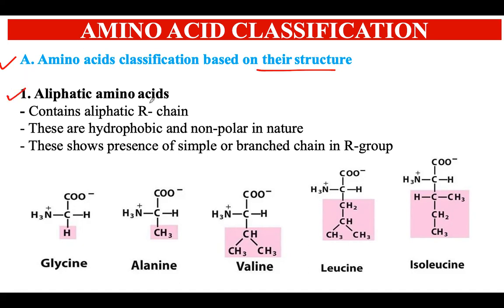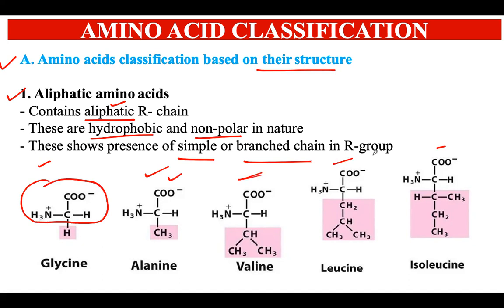The first category is aliphatic amino acids, which means the R group consists of aliphatic chains. These are hydrophobic and non-polar in nature. The R group can be simple or have a branched chain. There are five amino acids in this category. If you look at all five, the core structure is the same — carbon attached to a carboxyl group, an amino group, and a free hydrogen. If the R group is simply a hydrogen atom, that is glycine, also known as the simplest amino acid.